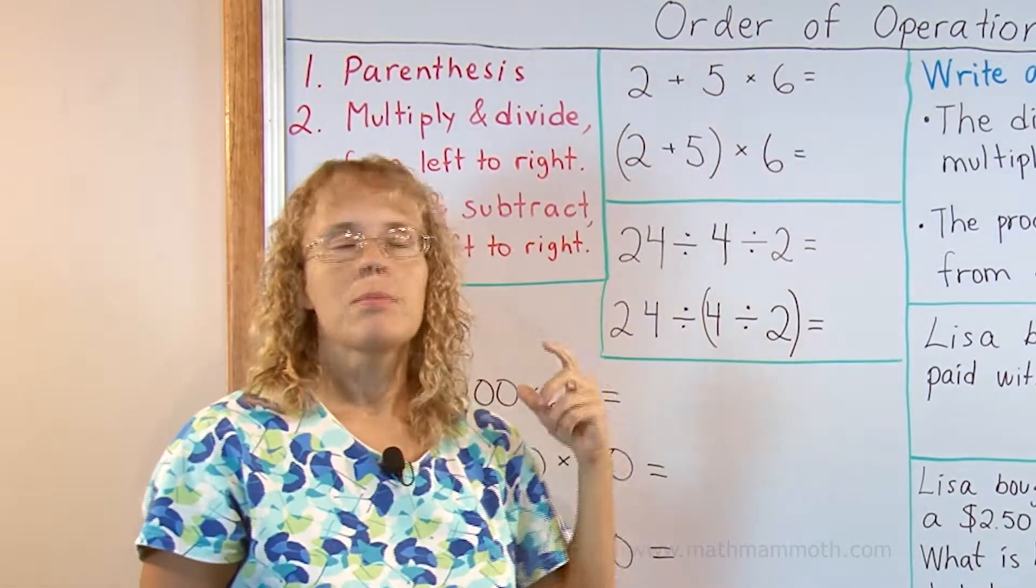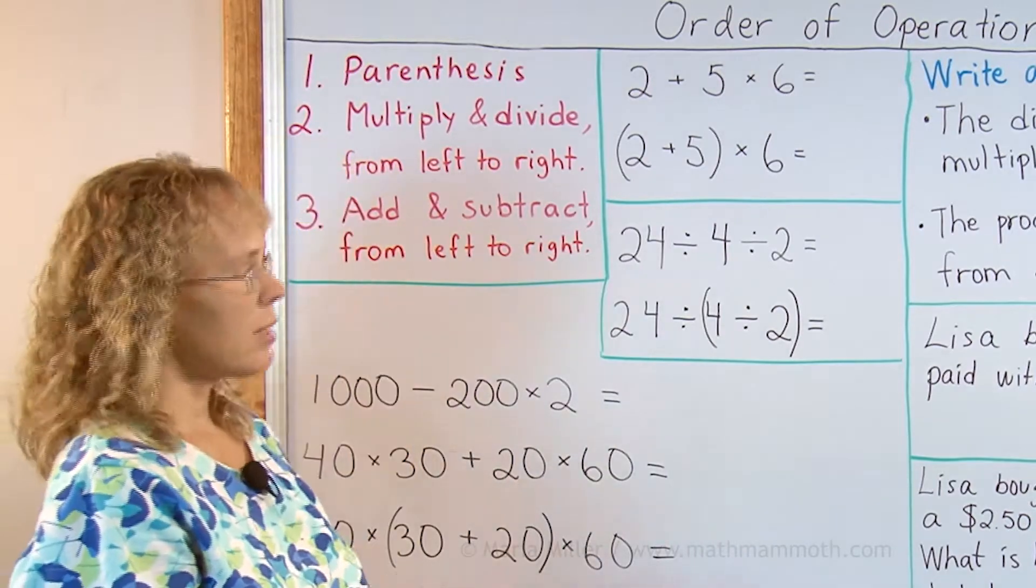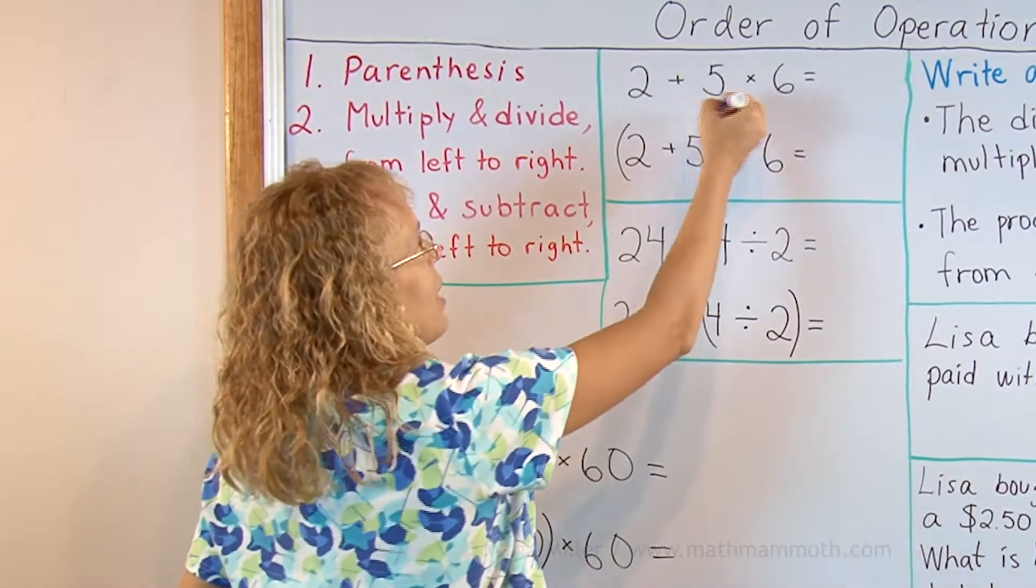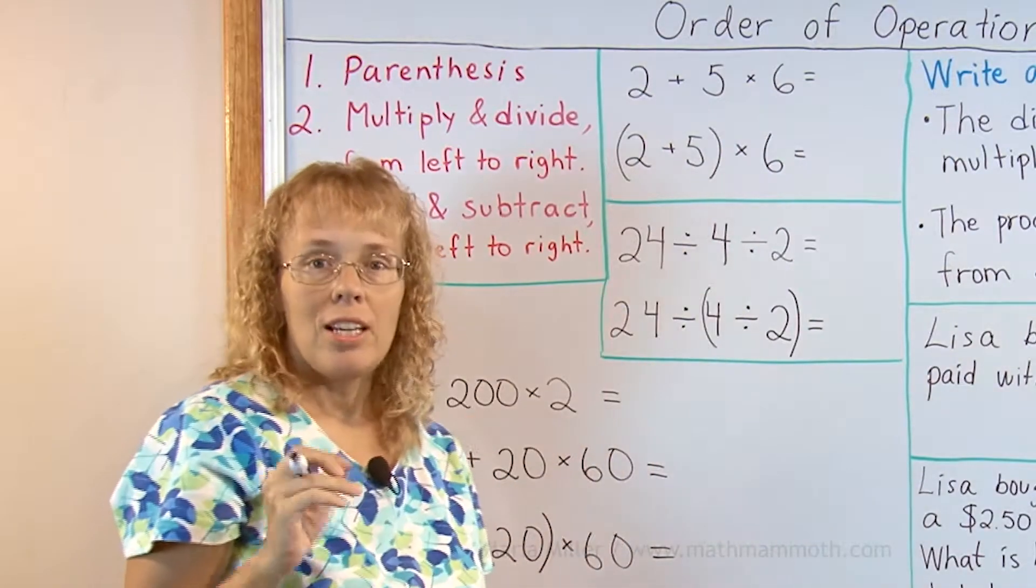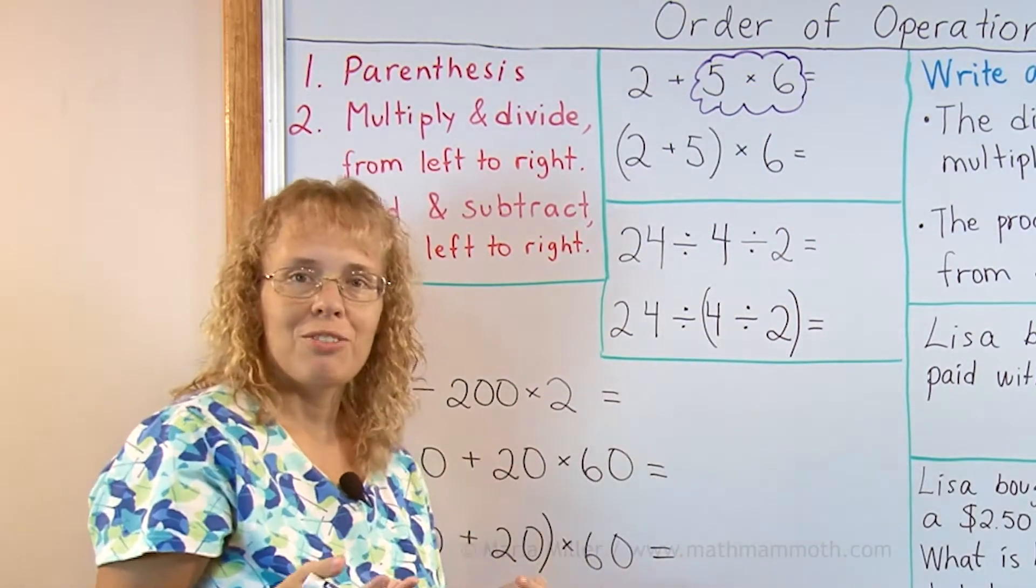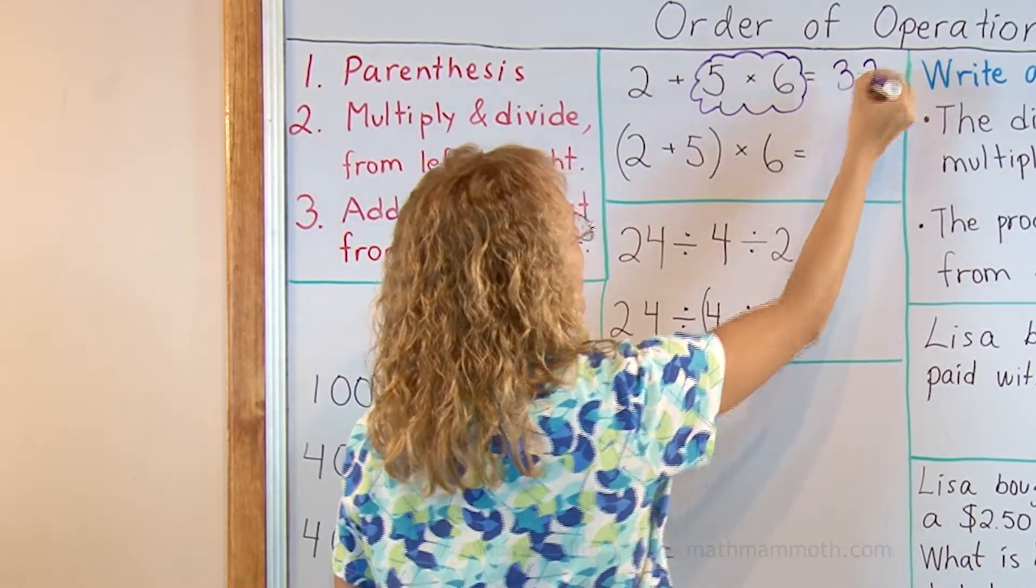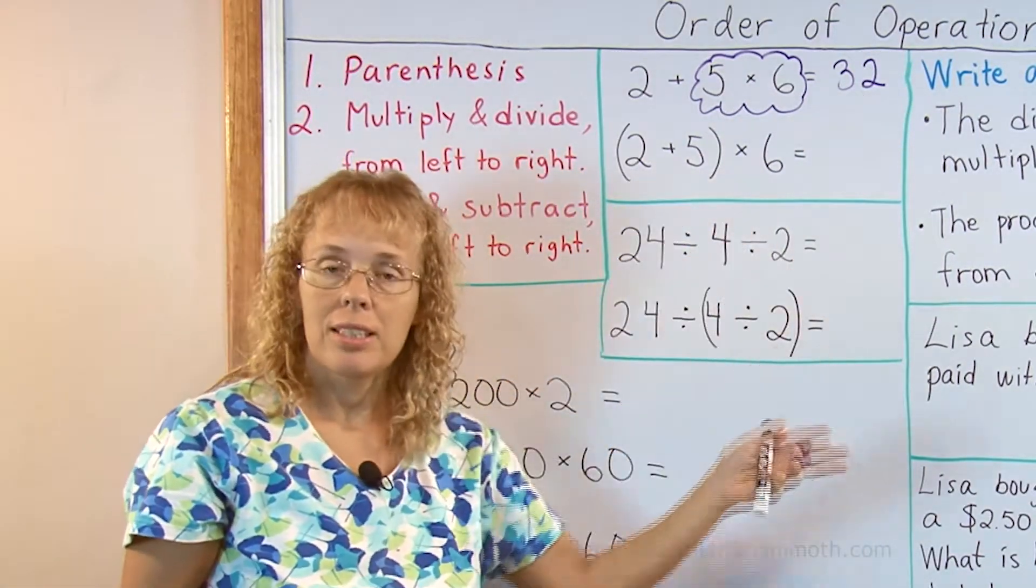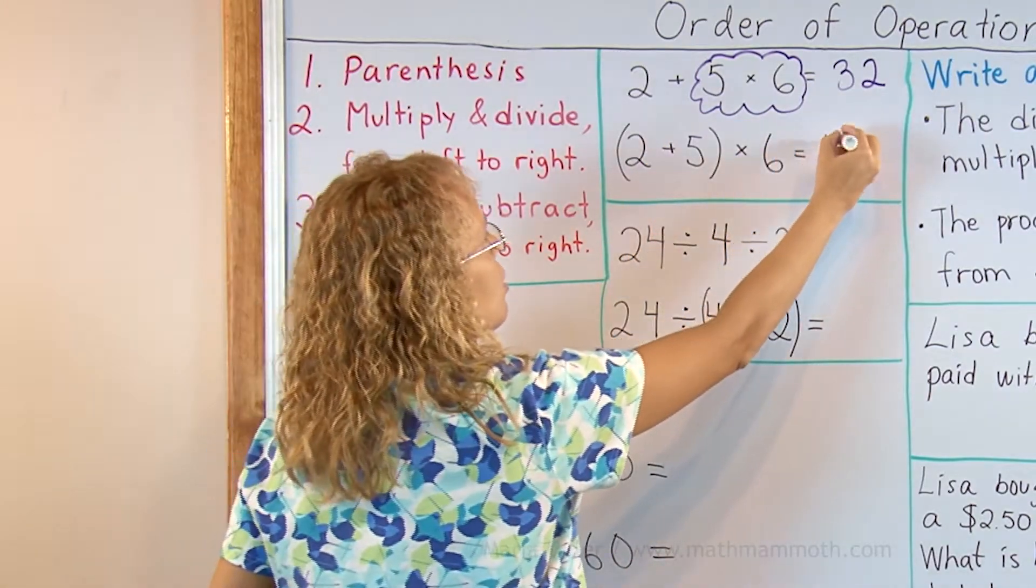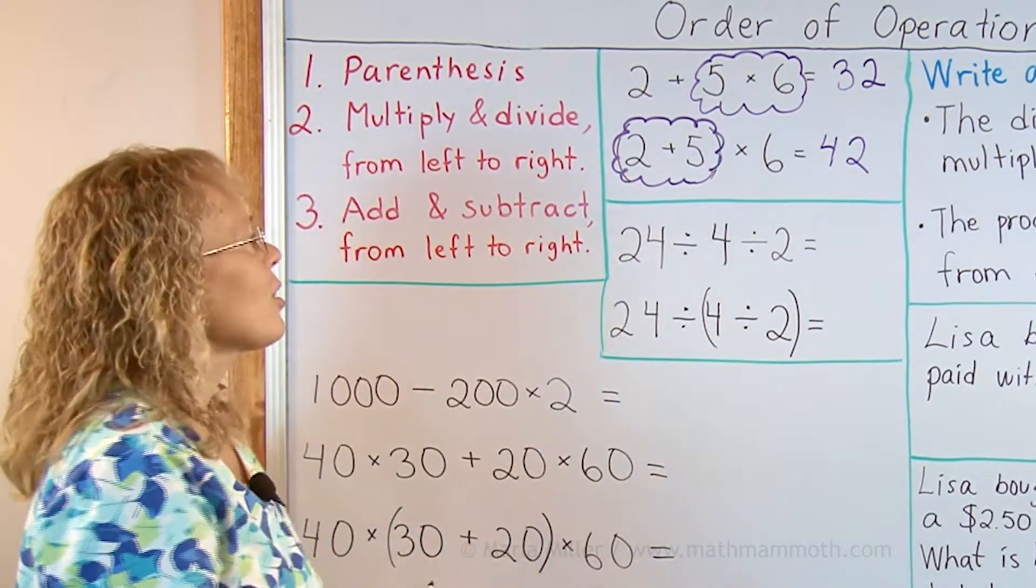Here's 2 plus 5 times 6. Do we do this operation first or this first? Now it is very clear that we're going to multiply before adding, so therefore 5 times 6 is to be done first. You can mark it by circling it with a colorful pen or they can make a bubble around it or cloud around it. So 5 times 6 is 30 and then 2 plus 30 is 32. Here we have 2 plus 5 in parentheses times 6. That means that parentheses is done first. 2 plus 5 is 7 and then times 6 is 42.